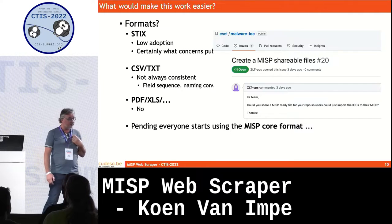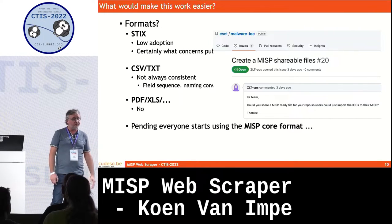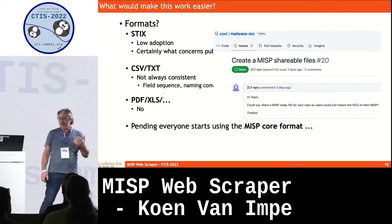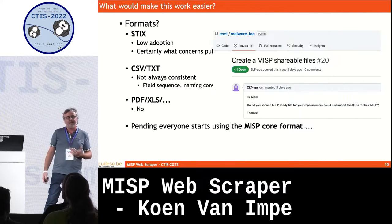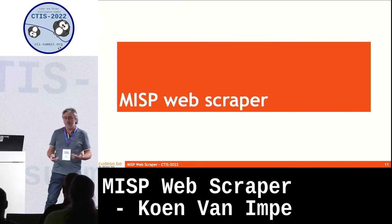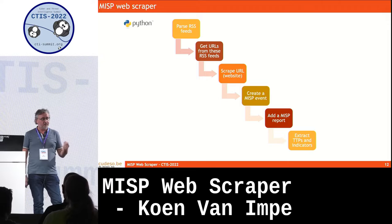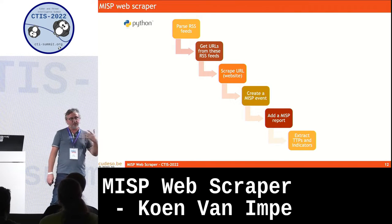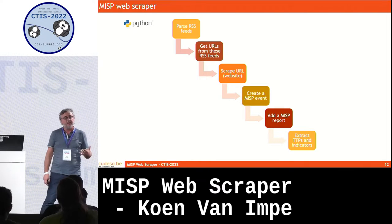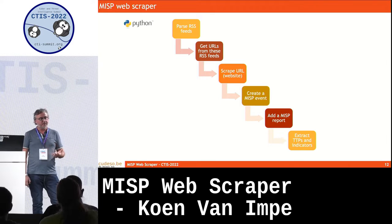Clearly, I'm not the only one struggling with this problem. For example, on the Recorded Future GitHub repository, there's also someone asking — okay, that you publish this very interesting data, but can we have it in a more structured format? So that's when I started building MISP Scraper, which is basically a Python script. It uses a list of RSS feeds, collects them, extracts all the URLs, visits these URLs, makes a MISP event, attaches a MISP report, and from that report extracts the indicators and the TTPs.